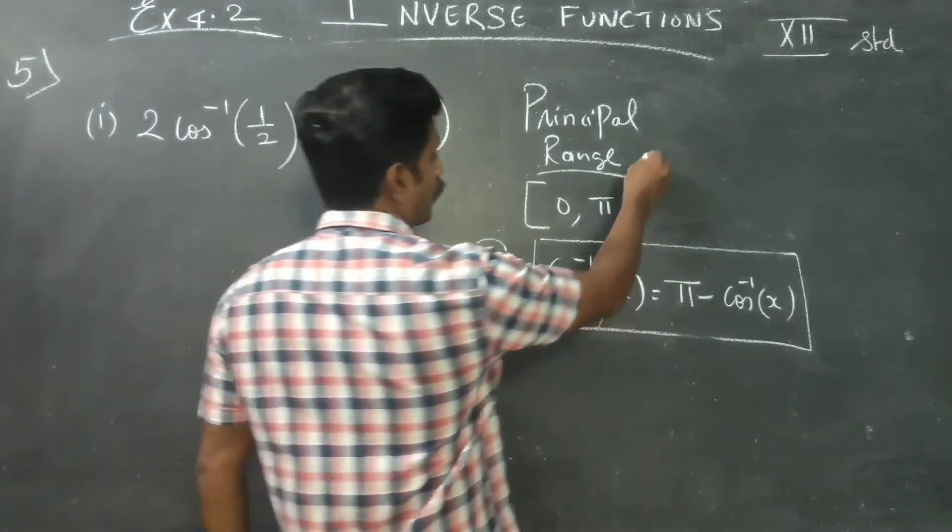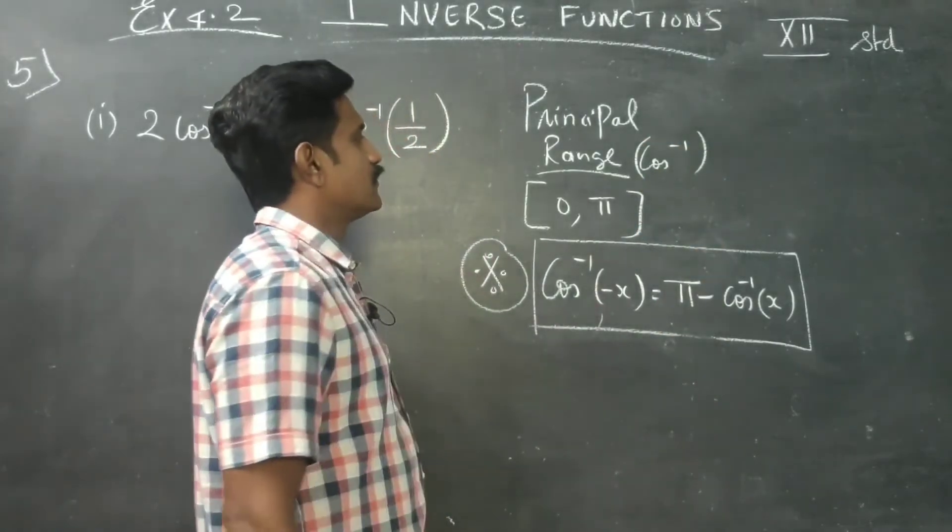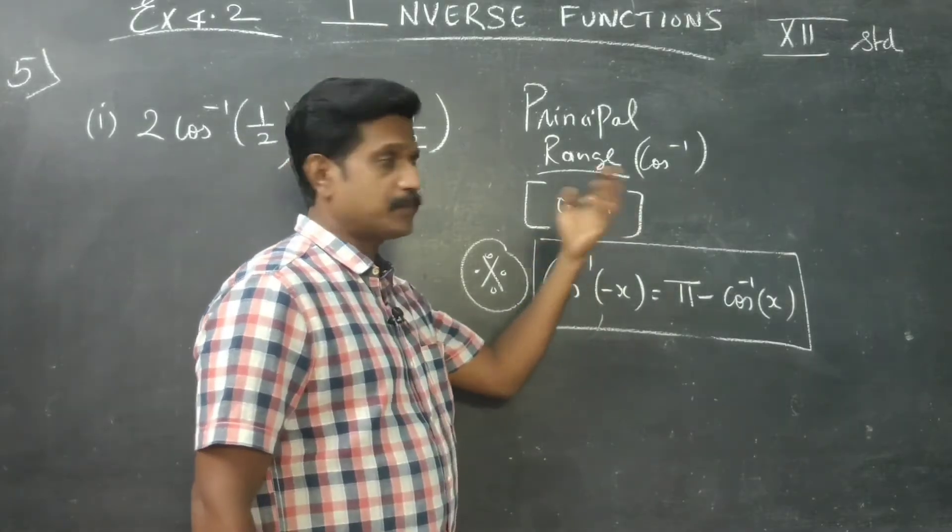Principle range of cos inverse must land only between 0 and pi.